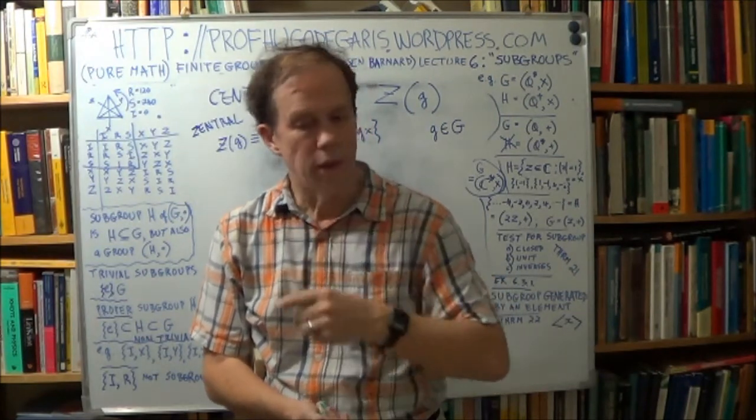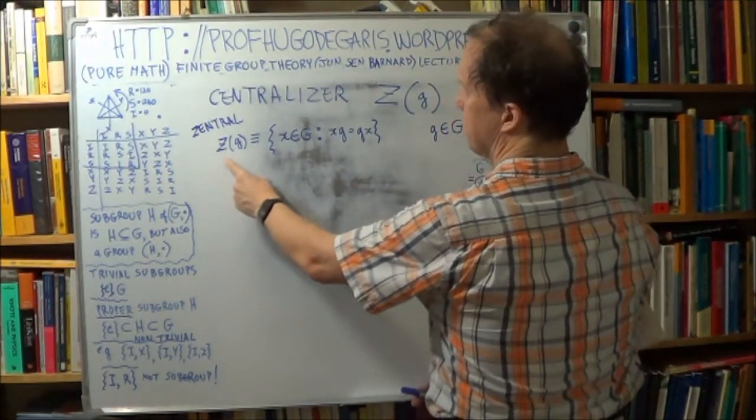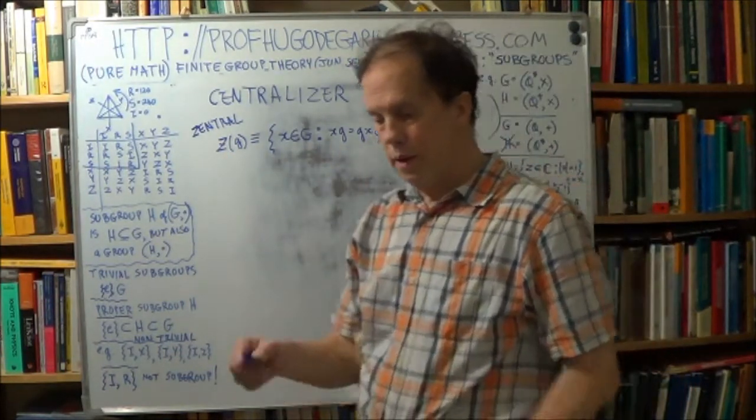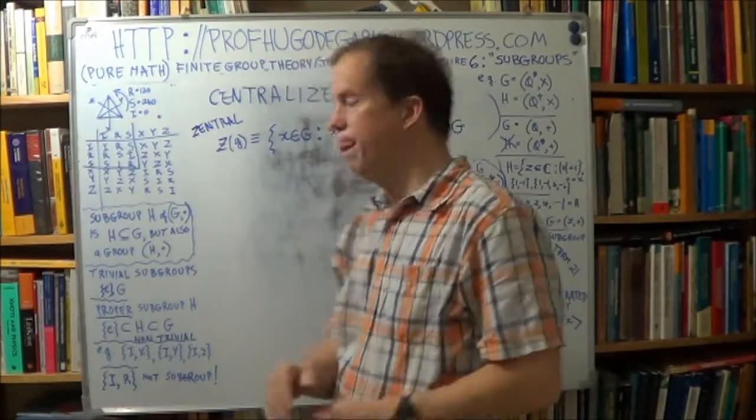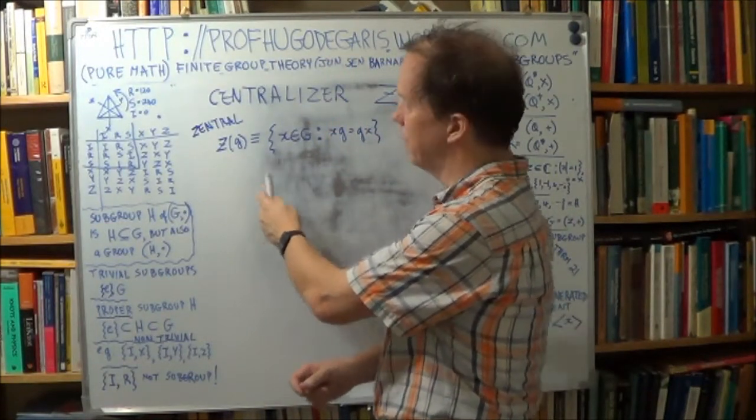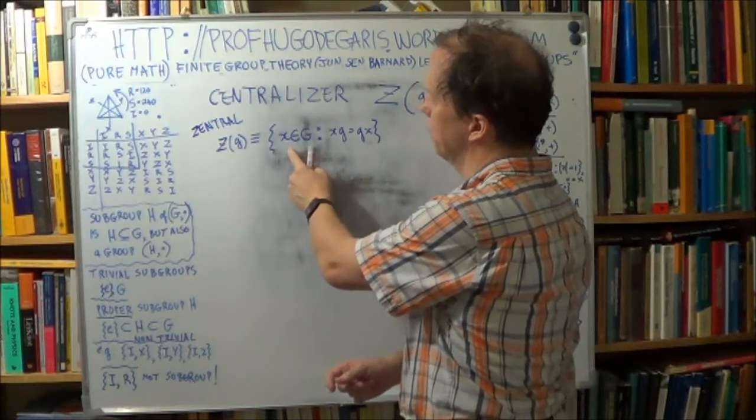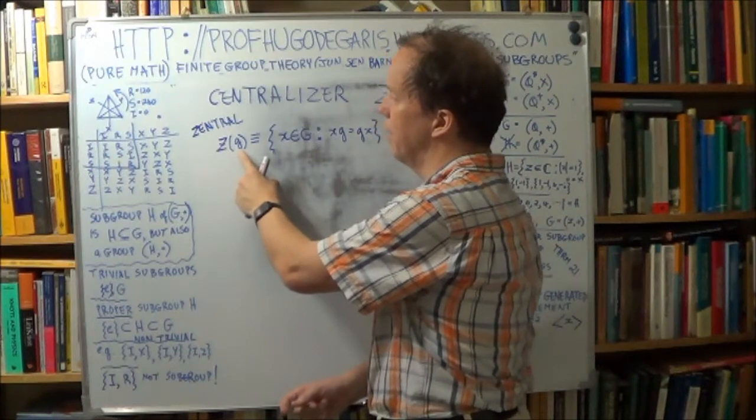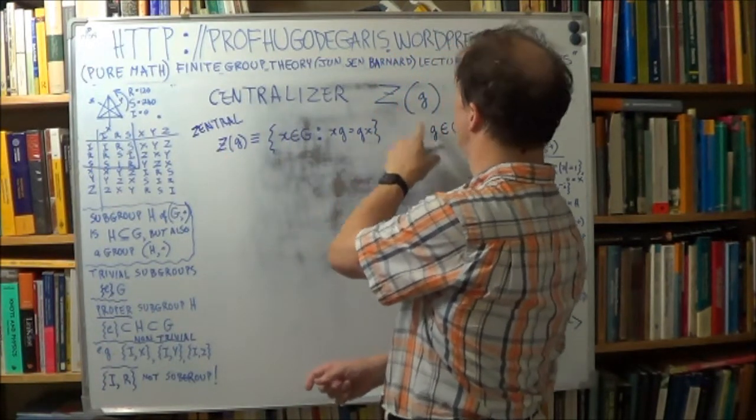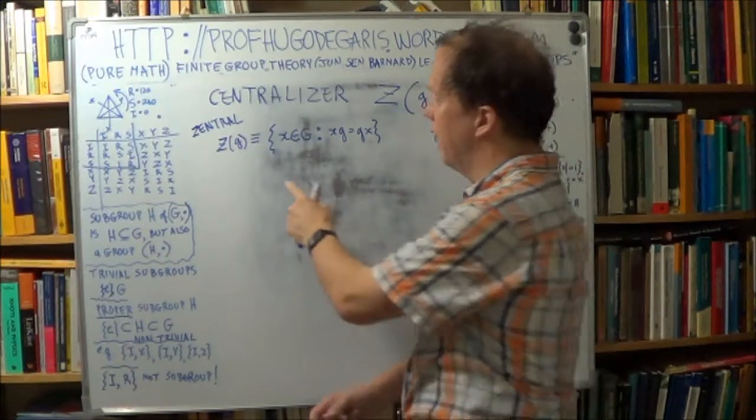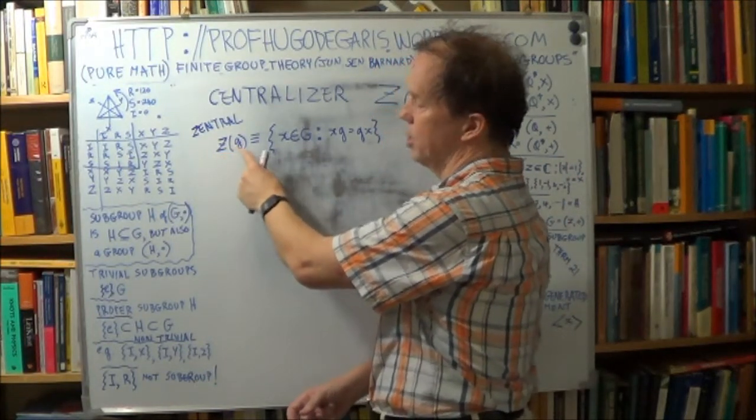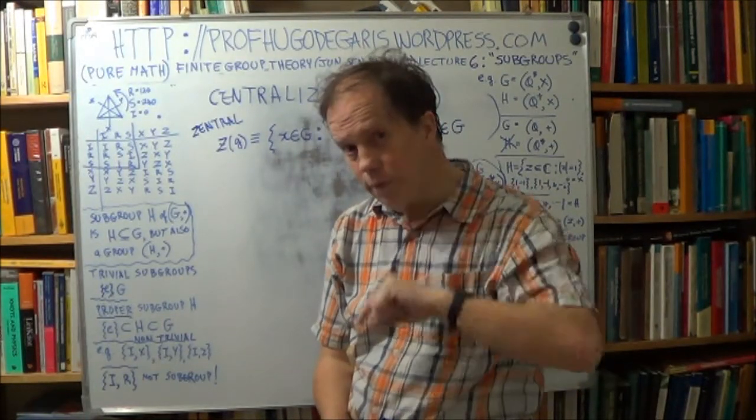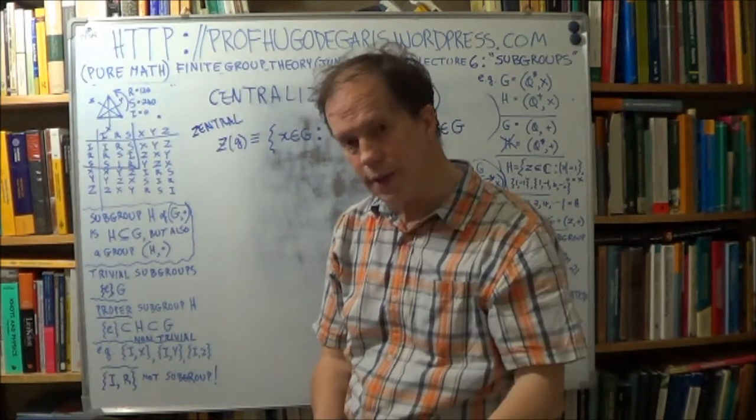So your centralizer here is just this. Now here's the punchline. That centralizer, that set of the elements that commute with g, it's this arbitrary element of your group, big G. That centralizer, that Z of g, is a subgroup. So a centralizer...